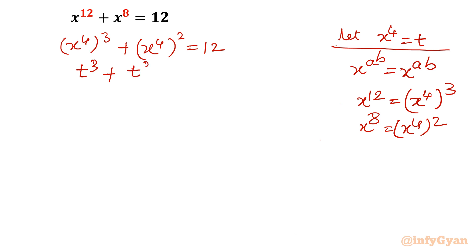So t^3 + t^2 — let me take 12 to the left — so it will be t^3 + t^2 - 12 = 0. Now this is a cubic equation. I can solve it using the Remainder theorem, long division, or synthetic division. I will show you both long division and synthetic division today. First, find one factor of the cubic equation t^3 + t^2 - 12.